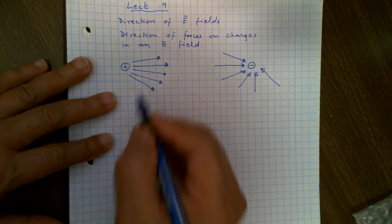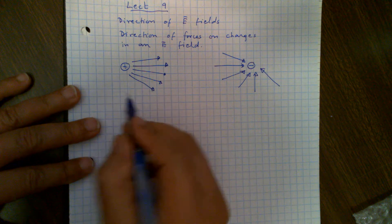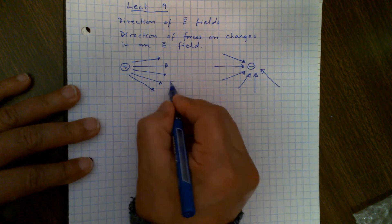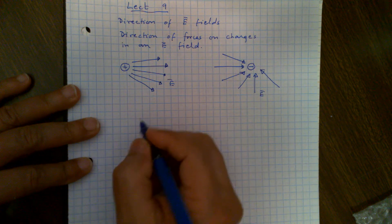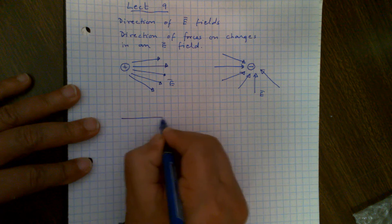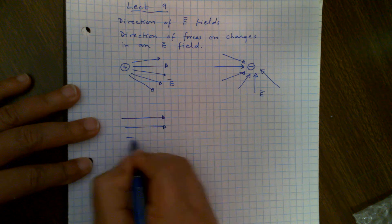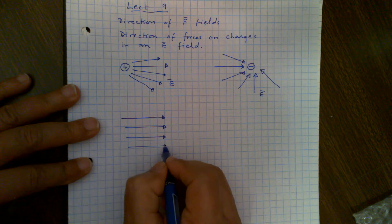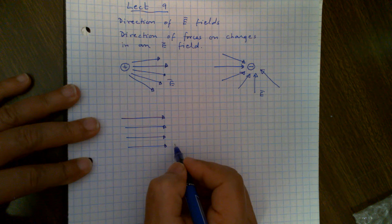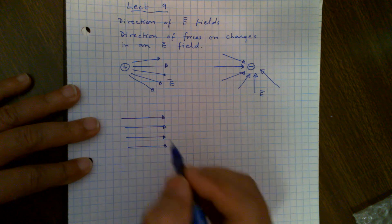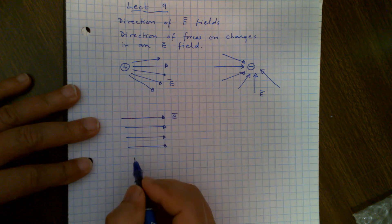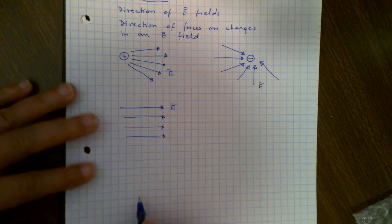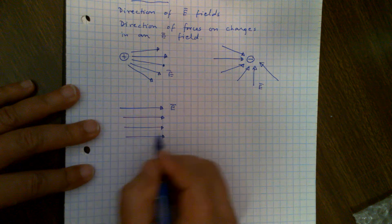Now, if you are very far away from a charge, you can consider these electric fields coming from these charges or other sources as parallel. Just like the sun rays coming to Earth — since it's far away, you assume that all the light rays are parallel. Similarly, we assume the electric field lines are parallel and going in that direction, towards the right, towards the positive x direction.